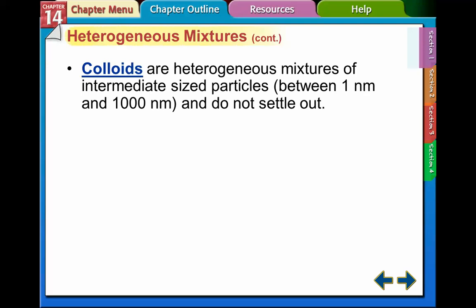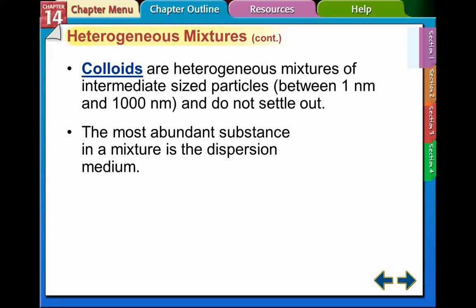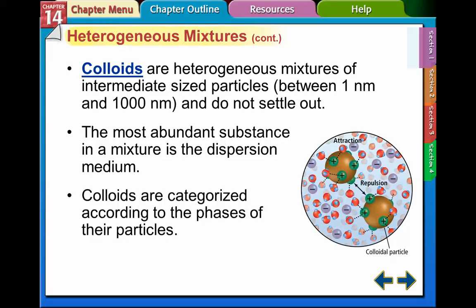Colloids are a different type of heterogeneous mixture. The particles are smaller than those in suspensions — they don't settle out. Colloidal particles range between one nanometer and a thousand nanometers in size. The most abundant substance in a colloid mixture is called the dispersion medium. Colloids are categorized according to the phases of their particles — solid, liquid, or gas. This picture shows the attraction and repulsion of colloidal particles, where they attract, repel, and collide with each other.